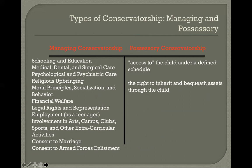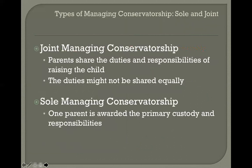When we talk about conservatorship, it's important to recognize two categories of conservators: the joint managing conservator and the sole managing conservator. If you're the joint managing conservator, then you're going to share control of the child's affairs with another person — that other person is usually a parent, but it doesn't have to be a parent. If you're a managing conservator who's not sharing that role with another person, then you're going to be the sole managing conservator. And if anyone else has any rights, that other person is going to be called a possessory conservator.